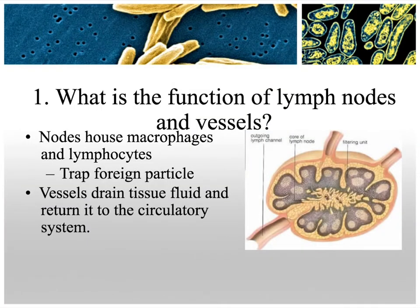We'll talk a lot about lymph and macrophages in this review. The function of lymph nodes and vessels: lymph nodes are filters for the lymph. Lymph is plasma that has leaked from your blood into the interstitial spaces between tissue cells, and it needs to be returned to the circulatory system.